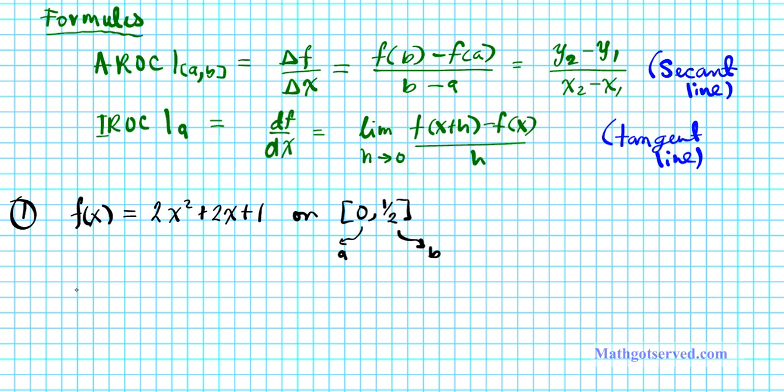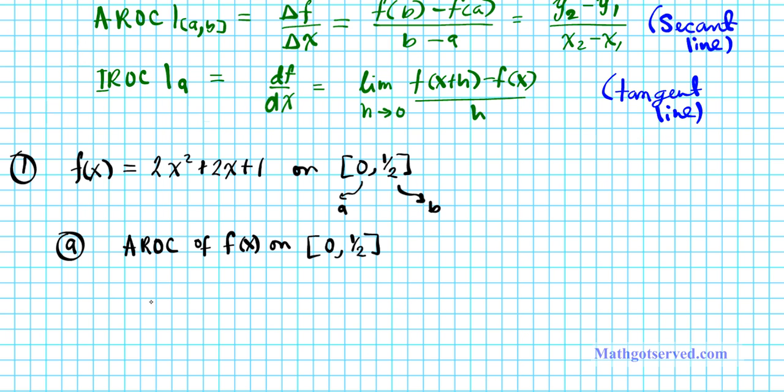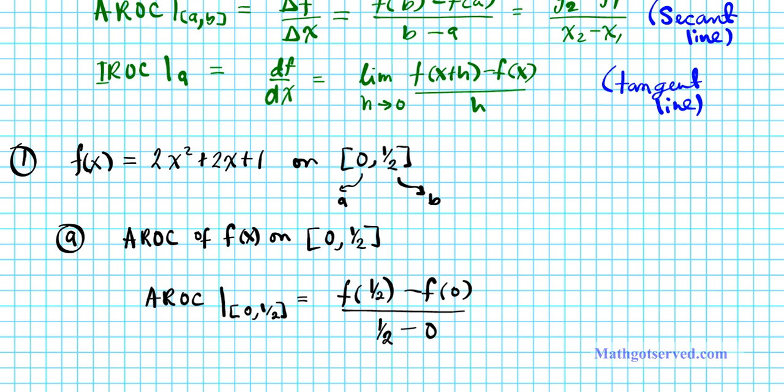So the a part, we have to compute the average rate of change of this function f of x on the interval 0 to 1 half. We know what the formula is for computing the average rate of change. So let's go ahead and write it down. So AROC, average rate of change on the interval 0 to 1 half. Remember, this is not a point, this is an interval. That is given by f of b, which is f of 1 half minus f of a, f of 0 divided by b minus a. So let's find out what these values are.